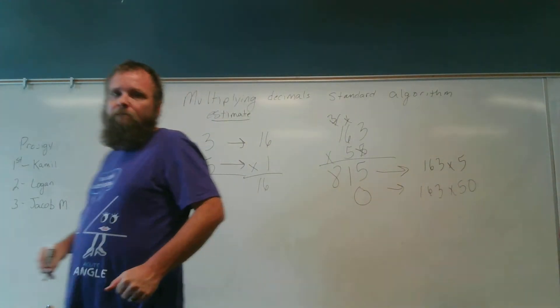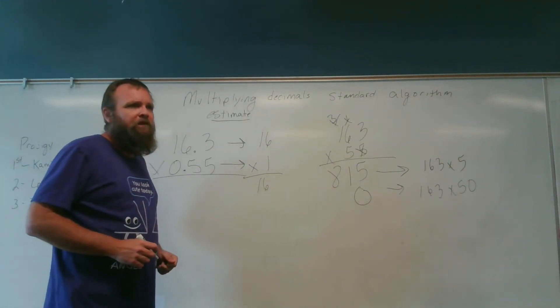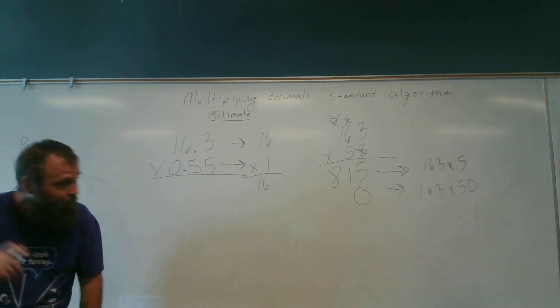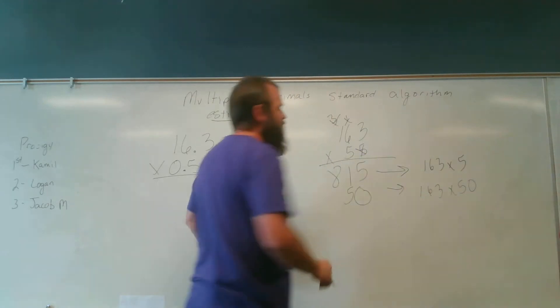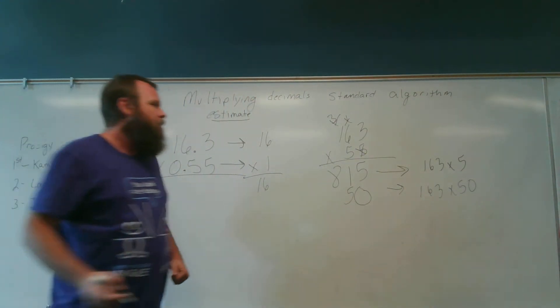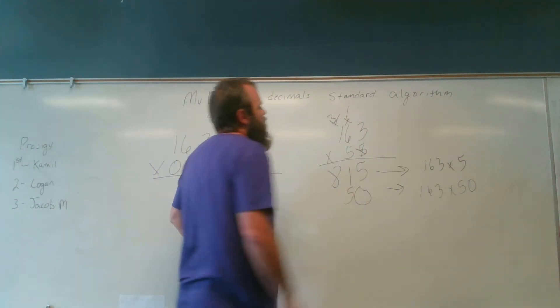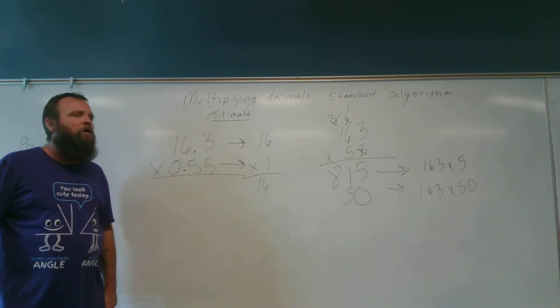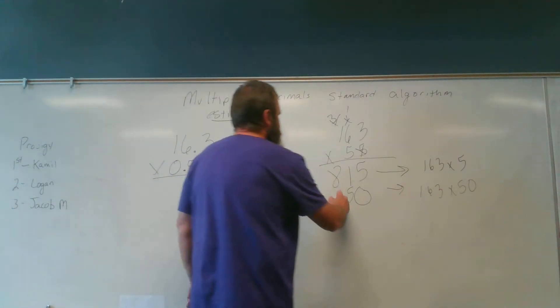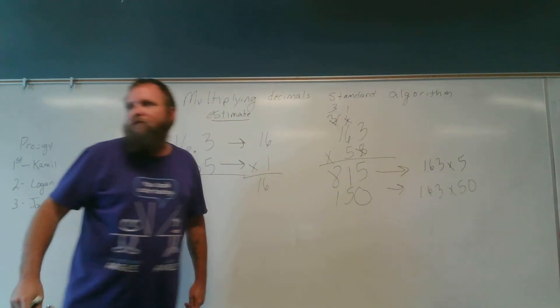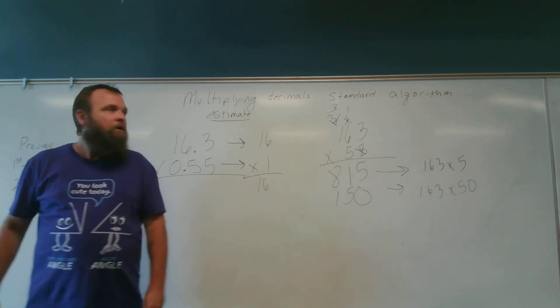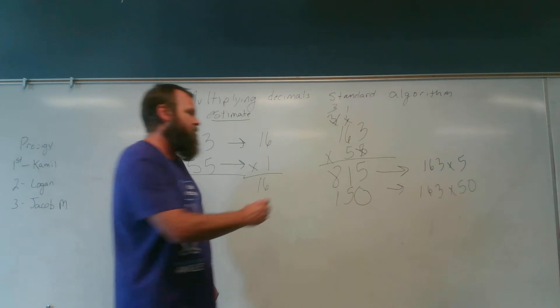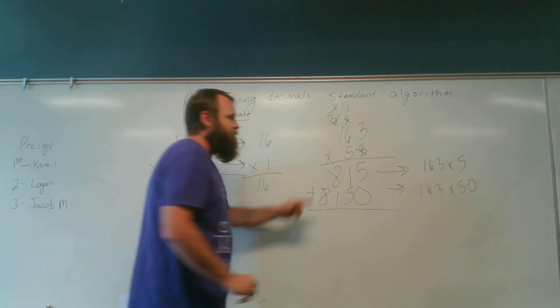So can you tell me what 163 times 5 is Dylan? 163 times 5 is what we multiply together to get what? Okay, all right we'll go through it. Dylan, what's 5 times 3? I'm going to need y'all to be quiet. 15. So I put my 5, I have 15 tens, so I have 5 tens and 1 hundred. What's 5 times 6? Plus 1, 31. And 5 times 1, plus 3, 8.